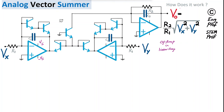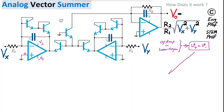Because negative feedback is in place, the voltage at the positive input terminal equals the voltage at the negative input terminal — virtual short. The positive terminal of each op-amp is grounded (zero volts), so via the virtual short, the negative terminal is also at zero volts — effectively a virtual ground.